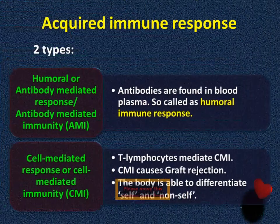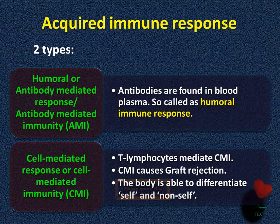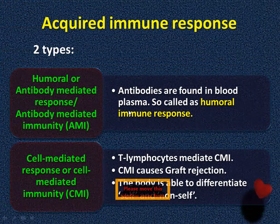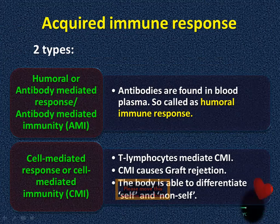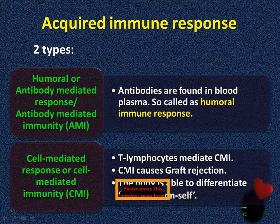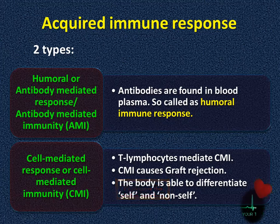Acquired immune response — whether natural active or artificial active — is of two types: humoral (antibody-mediated) response and cell-mediated response. In humoral immunity, antibodies are found in blood plasma. In cell-mediated immunity, T lymphocytes mediate the response and cause graft rejection. Graft rejection occurs when a foreign organ — like a donated kidney — is introduced into our body and rejected. Tissue matching and blood group matching are essential before any graft or transplant, and the patient has to take immunosuppressants for life.